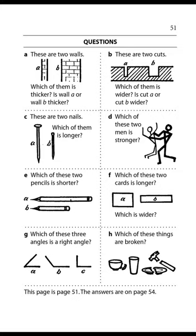These are two nails. Which of them is longer? Nail A is longer. Which of these two men is stronger? The man who is on his feet is stronger. Which of these two pencils is shorter? Pencil B is shorter. Which of these two cards is longer? Card B is longer.